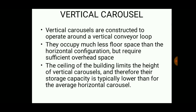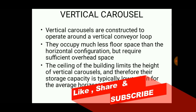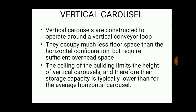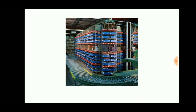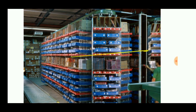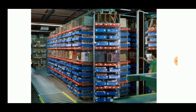Vertical carousels are constructed to operate around a vertical conveyor loop. For a vertical carousel, minimum floor space is needed, whereas the horizontal carousel system requires a large floor space. In the case of a vertical carousel, the height of the room or factory is important because it is a vertical unit. They occupy much less floor space than the horizontal configuration but require sufficient overhead space. The ceiling of the building limits the height of the vertical carousels, as shown in the picture.